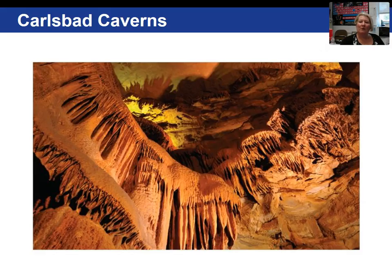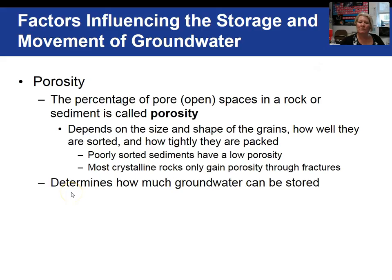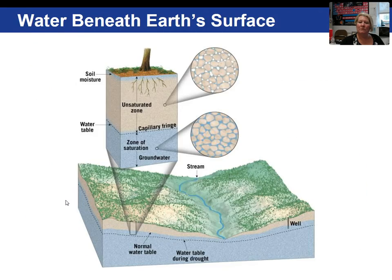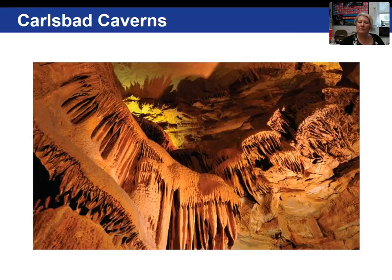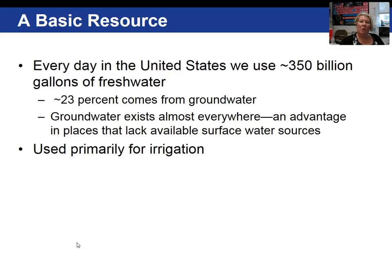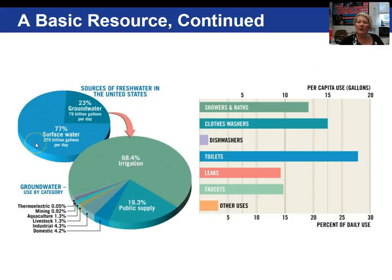Here is groundwater that has dissolved the carbonate rock and created a cavern. I'll show you the examples of how groundwater equalizes flow of rivers and streams in a few slides. 23% of the water that we use in the United States comes from groundwater. Primary users are farmers who irrigate the land. Looking at this pie diagram, we use 77% surface water and 23% groundwater in this country. Most of that 23% groundwater is used for irrigation, some for public supply, and some miscellaneous uses.